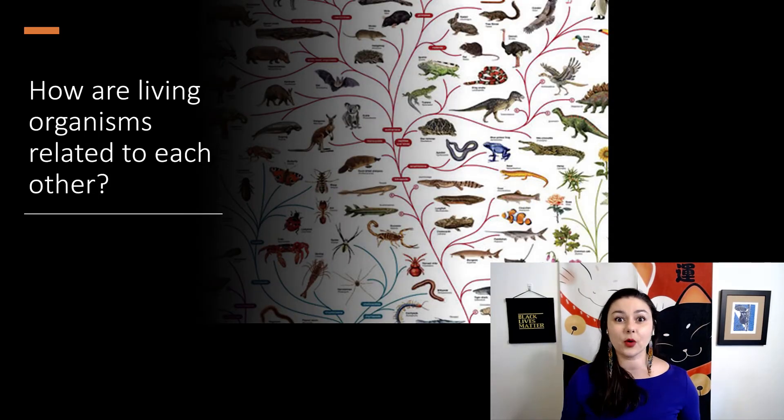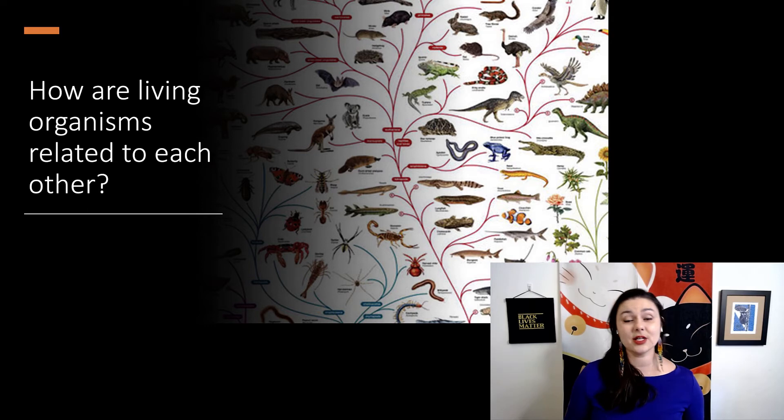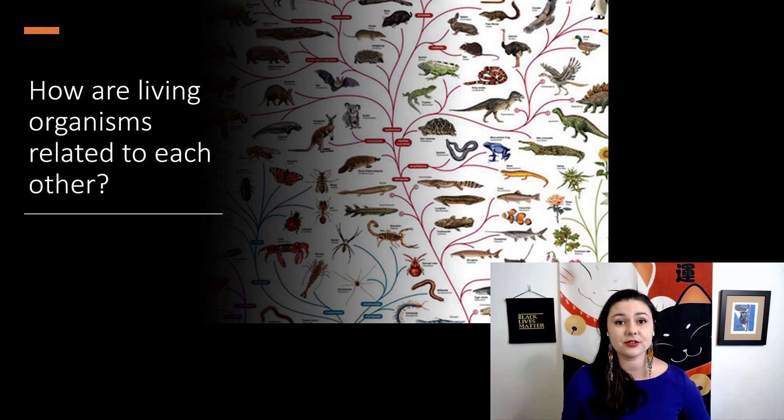Some of the important questions we try to ask here are first, how are living organisms related to each other? We spend a lot of time on taxonomy and phylogeny. We're trying to figure out who is more closely related to whom. Because once we know the pattern of how different species are related, then we can get at the process. What happened? Why did something evolve this way? But of course, we first need to know this pattern of how things are related.